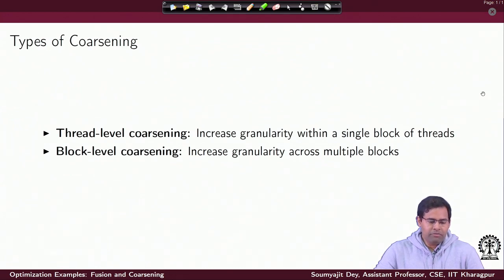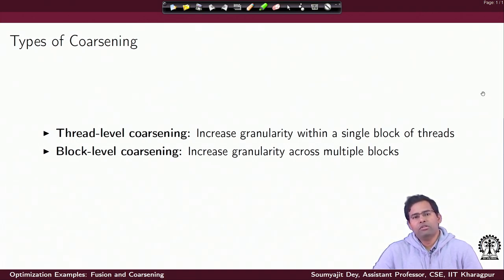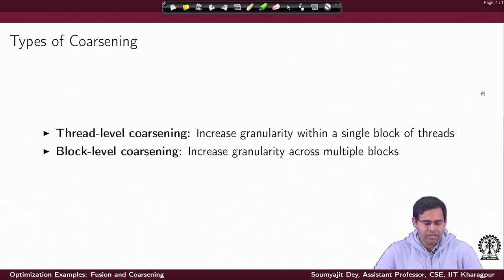There are different types of coarsening, just like we discussed different techniques of kernel fusion — different possible ways to implement fusion among GPU kernels. Similarly, there are different possible ways in which you can coarsen a GPU kernel. Basically, you have to increase the per-thread activity, and that can be done at the thread level or at the block level.